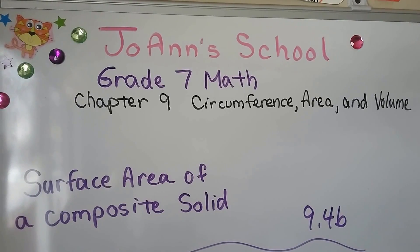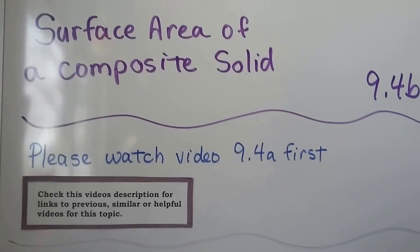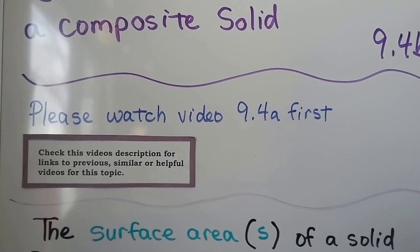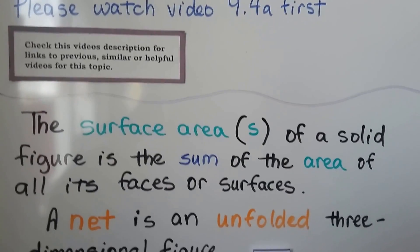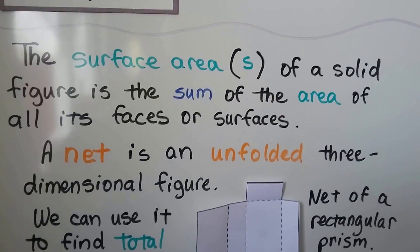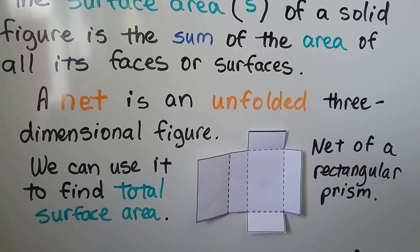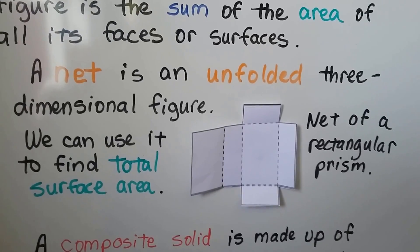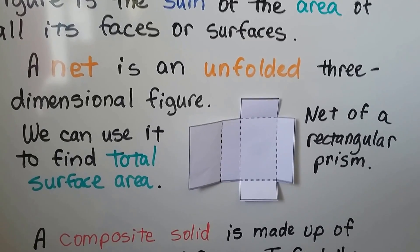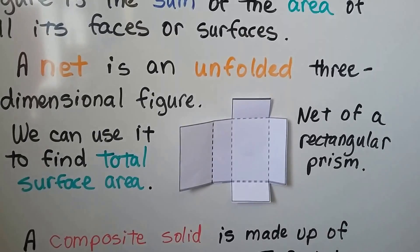Surface area of a composite solid, lesson 9.4b. If you haven't seen 9.4a, you need to see that first — there's a link in the description. The surface area of a solid figure is the sum of the area of all of its faces or surfaces. A net is an unfolded three-dimensional figure, and we can use it to find total surface area.